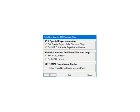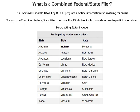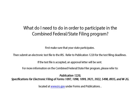Global questions refer to the IRS's Combined Federal State Filer Program as well as the Payer Name Control. The Combined Federal State Filing Program simplifies information returns filing for payers. Through the program, the IRS electronically forwards original returns to participating states. The participating states are listed below. To participate, first make sure that your state participates in the program, then submit an electronic test file to the IRS. Please refer to Publication 1220 for the test filing deadlines. If the test file is accepted, an approval letter will be sent. For more information, please refer to Publication 1220, which can be found on the IRS website under Forms and Publications.